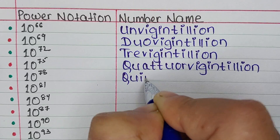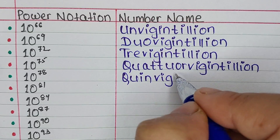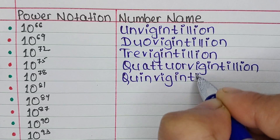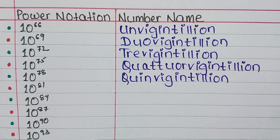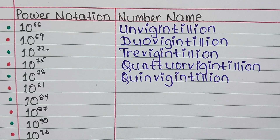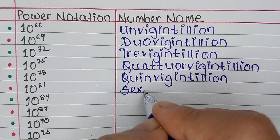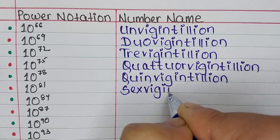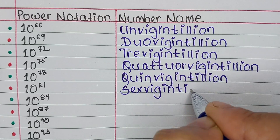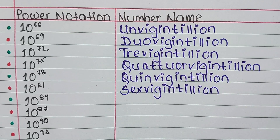Next is 10 to the power 78. And it is known as Quinvigintillion. Next is 10 to the power 81. The name for this number is Sexvigintillion.